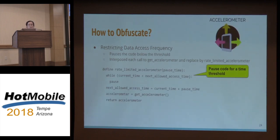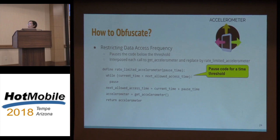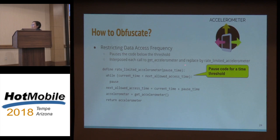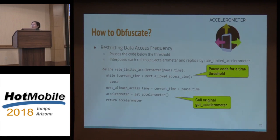Another example: restricting data access frequency, using the accelerometer as an example. If we want to limit access from 100 Hz to 50 Hz, we pause the call for some time so the access will be slower. The original call to get the accelerometer is getAccelerometer. We implement a different function called rateLimited and provide an input argument. In this function, we first pause the call for some time, then call the original function. Every time a call to getAccelerometer is made, it is intercepted and replaced by the rate-limited version.